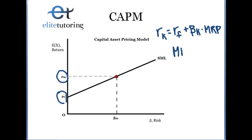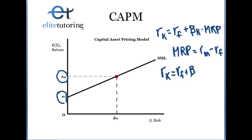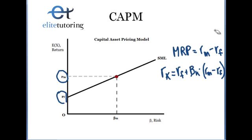The market risk premium equals the return from the market minus the risk-free rate, and that's because we would expect a premium return for investing in the market stock versus just holding our money in a risk-free asset. So I'm just going to rewrite this in the form that I would normally write it in, which is that the return of our stock K would be the risk-free rate plus the beta for our stock K times the return from the market minus the risk-free return. You should know how to manipulate the formula into any form that you need it.